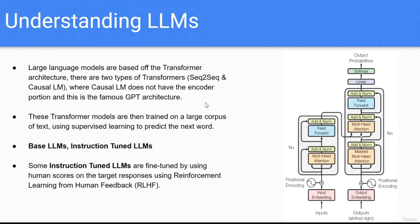So there are different types of LLMs. You have the base LLMs - when these models are first trained, they're trained on a large corpus of text like the Internet. You train it to be really good at predicting the next word in a sentence - training it on billions of sentences and paragraphs where you truncate off one word and get it to predict the next word. Once it gets really good at that, we then instruction-tune them.